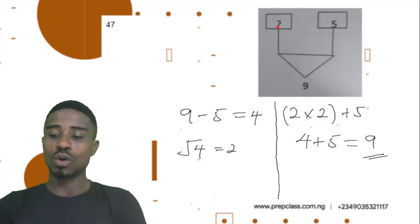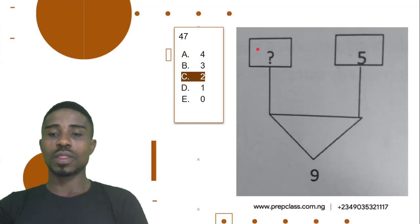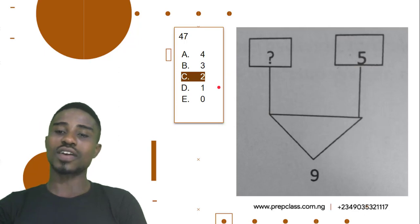Then if you have to try it out, if it's correct, we're going to say 2 times 2 plus 5. 2 times 2 is 4. 4 plus 5 is equal to 9. So definitely 2 is our answer. Let's check it out. Question 47, 2 is our correct answer. Let's look at the next question.